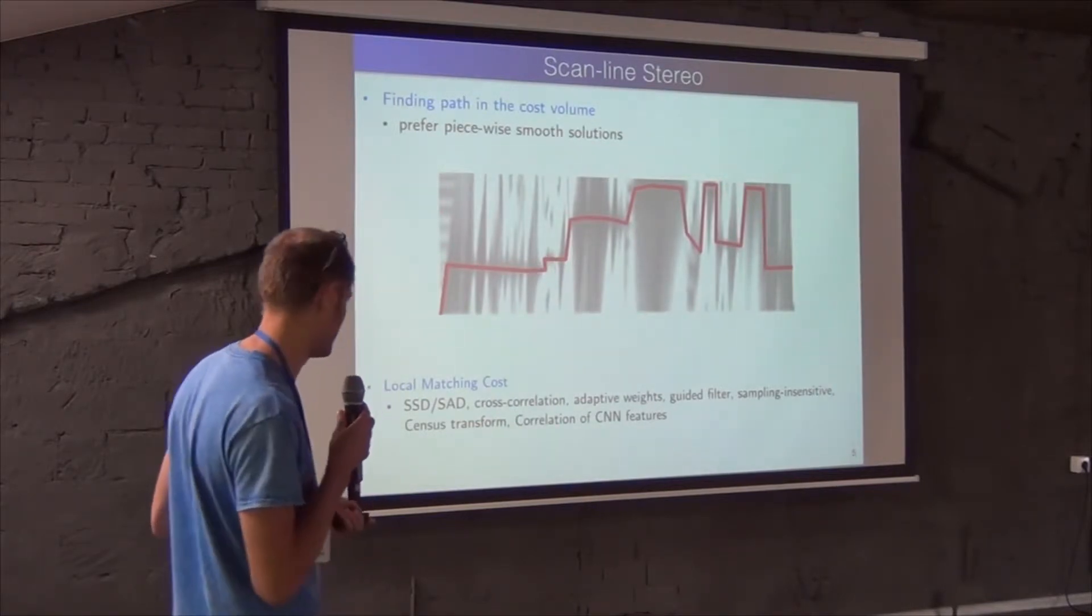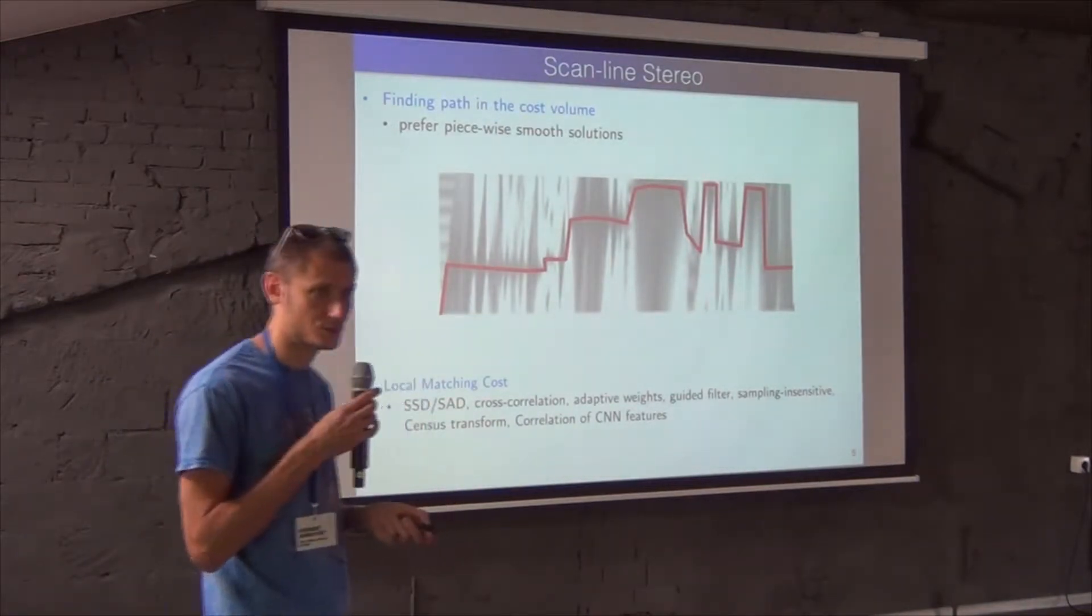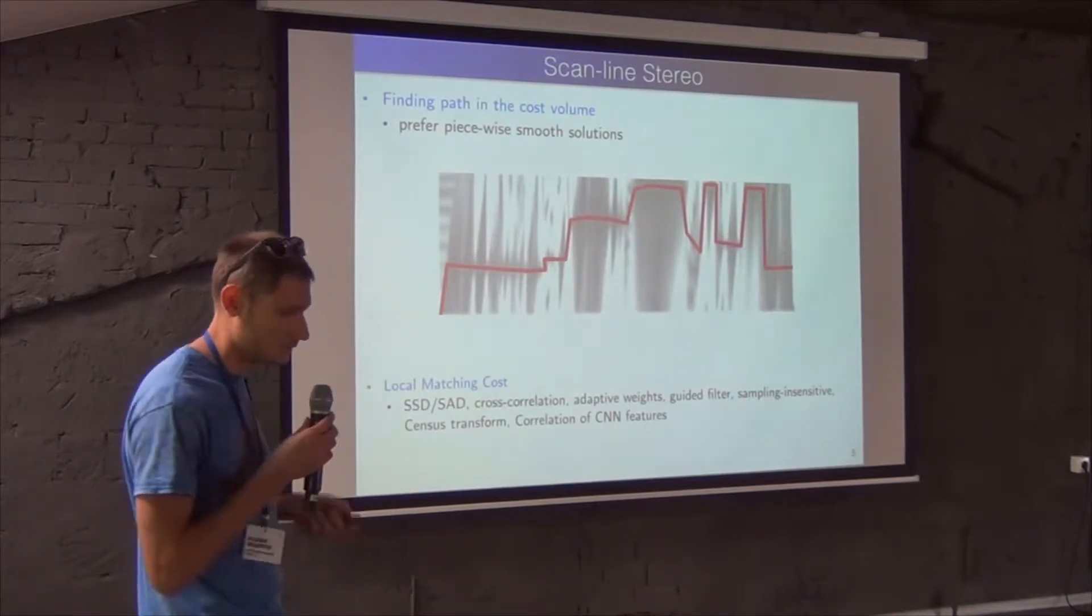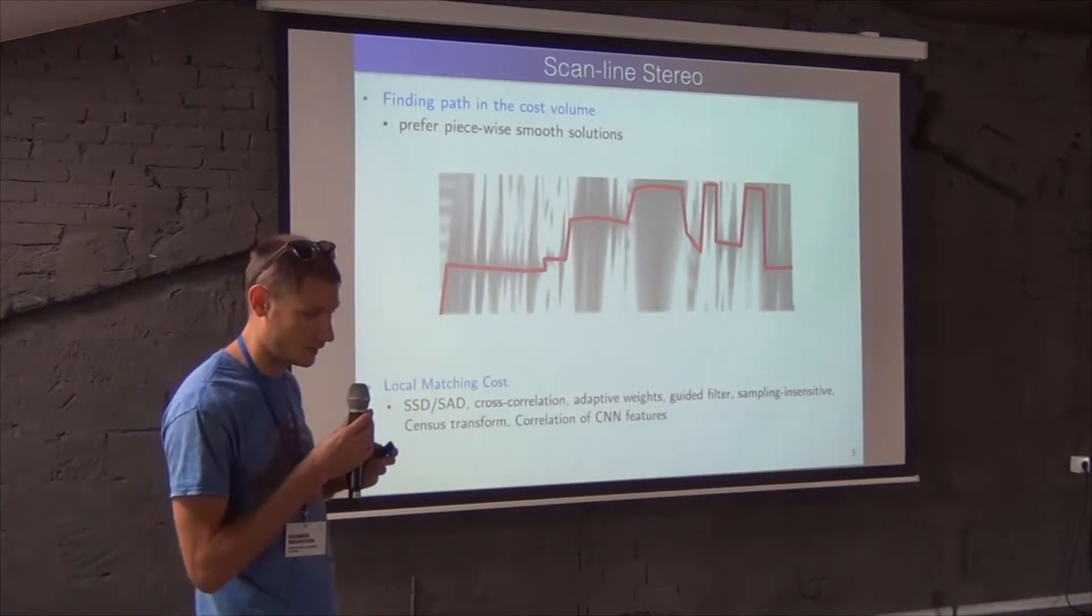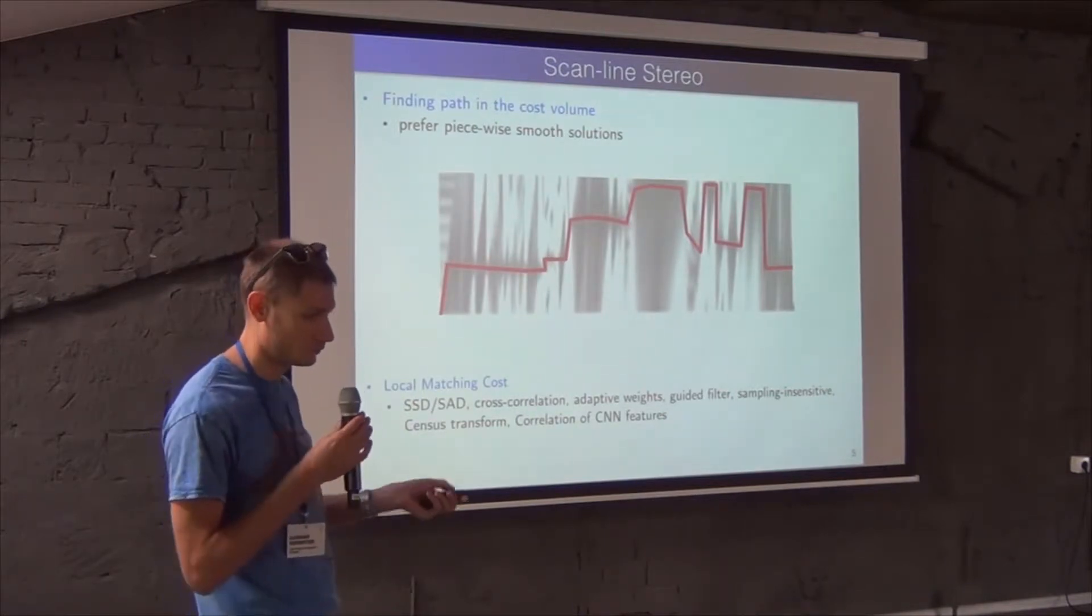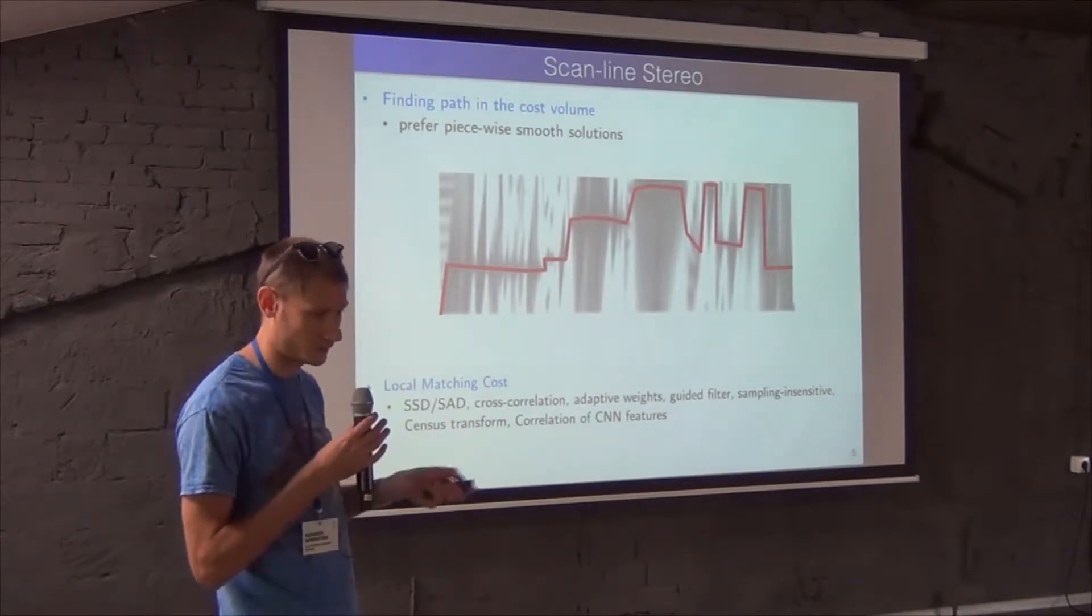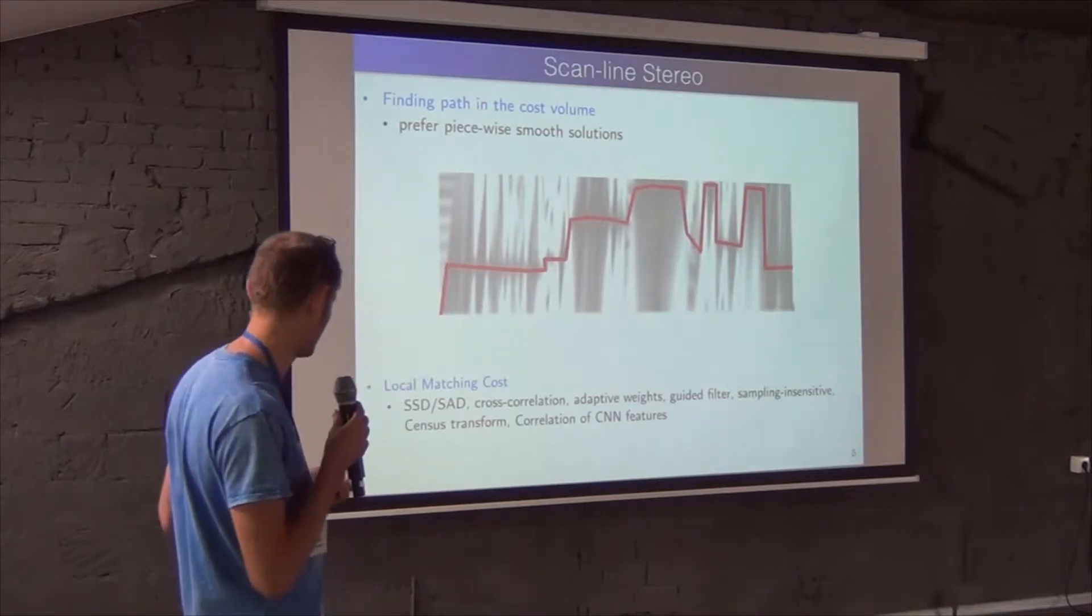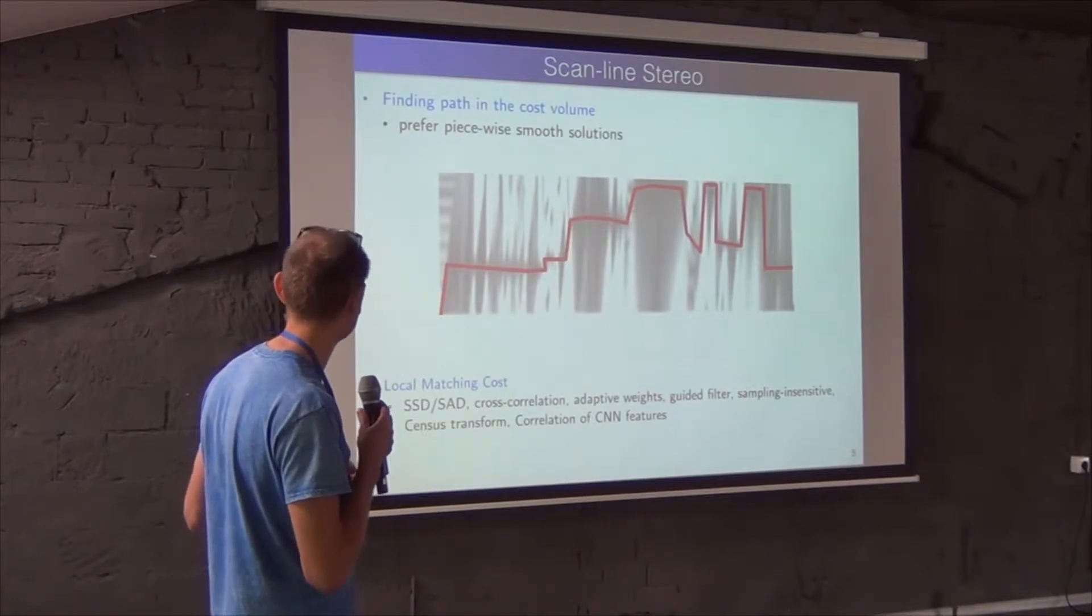This problem can be also visualized as finding the path in this cost volume. So here is now color coded the cost. And this cost can be something like sum of square differences of pixel colors, or absolute differences of pixel colors. And actually, people have engineered a lot of these costs to make them insensitive to the sampling of the pixels in images, insensitive to illumination changes, to make them adaptive and so on. And we are going to replace this cost a bit later on with the CNN features.